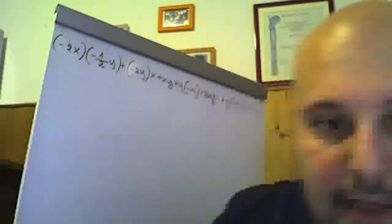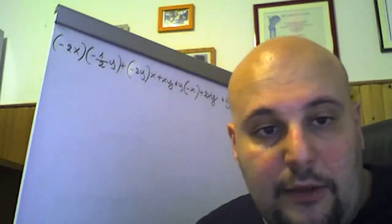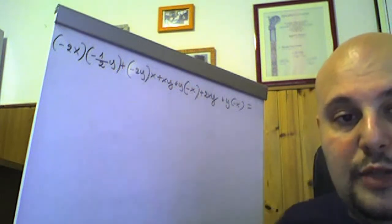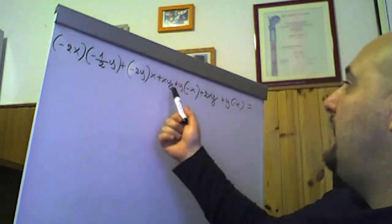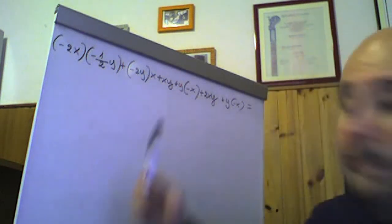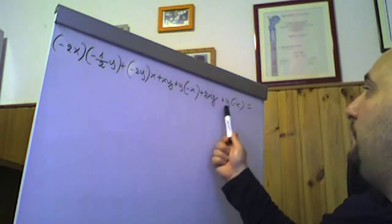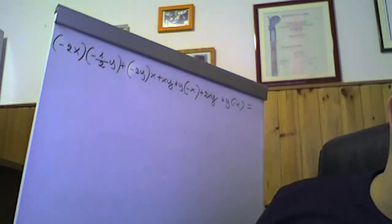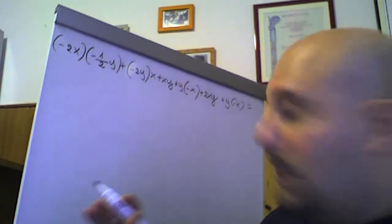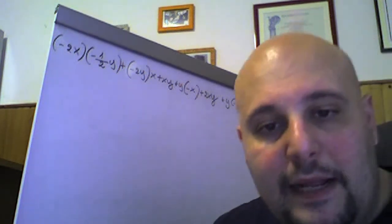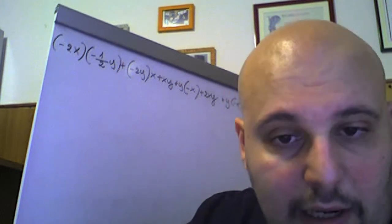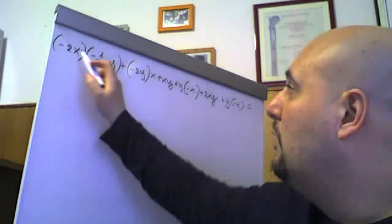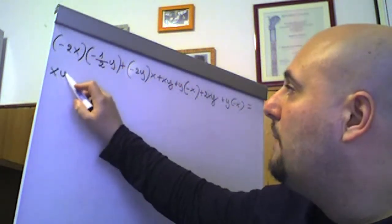Andiamo avanti con la seconda espressione, il numero 130: (−2x)(−1/2 y) + (−2y)(x) + xy + y(−x) + 2xy + y(−x). Come al solito, prima eseguiamo le moltiplicazioni fra monomi e poi le eventuali somme algebriche. Meno per meno è più: 2 × 1/2 = 1, x × y = xy. Poi meno 2 × 1 = −2, y × x = xy.